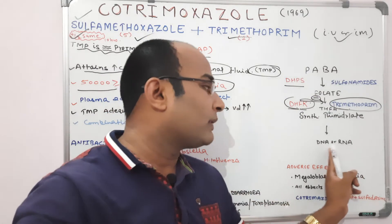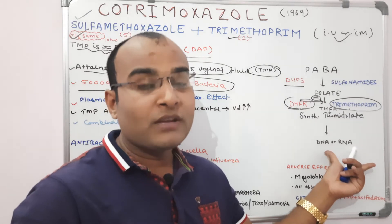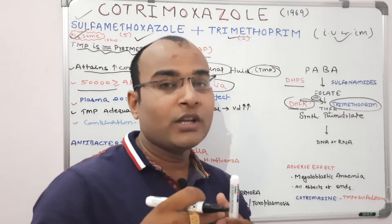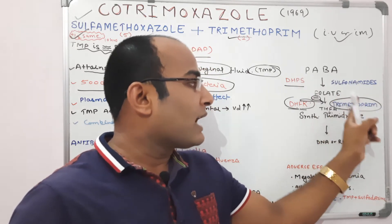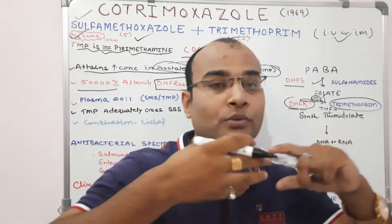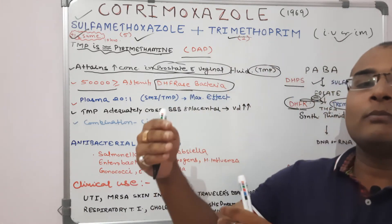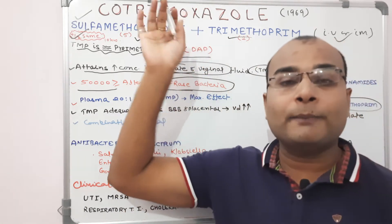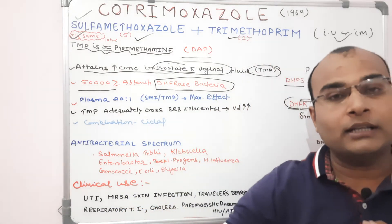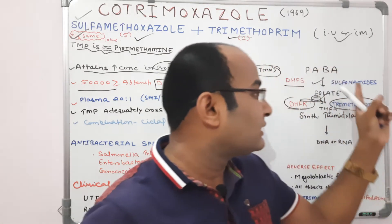Once this mechanism of DNA/RNA synthesis is inhibited, there will be a blockage of genetic material formation in the bacteria. Cotrimoxazole contains the combination of Sulfamethoxazole and Trimethoprim: Sulfamethoxazole inhibits the first step and Trimethoprim inhibits the second step — meaning we sequentially block two steps of folic acid synthesis. When used separately, each drug is bacteriostatic, but when combined as Cotrimoxazole, it becomes bactericidal in nature due to this sequential block.